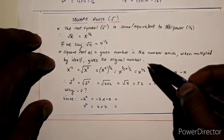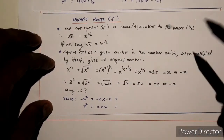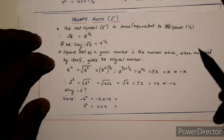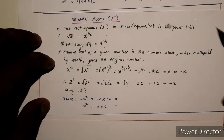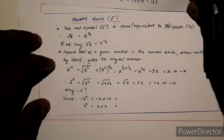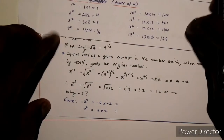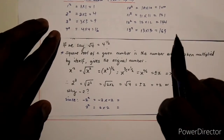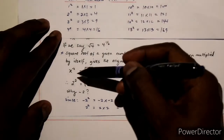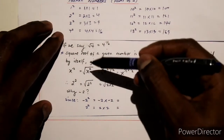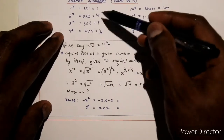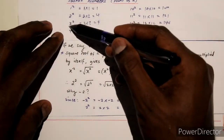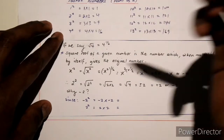The square root of a given number is the number which, when multiplied by itself, gives you the original number. That's why we have square numbers. So when you get the square root of a square number, you will end up getting the original number again.